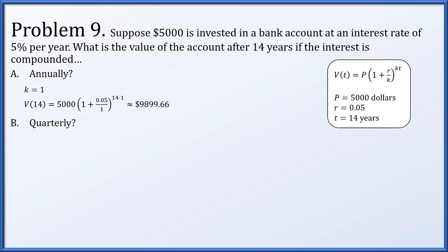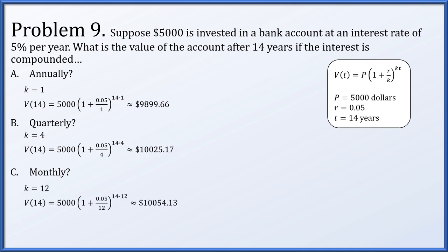What if we compound the interest quarterly? We get one quarter as much interest, but four times as often — k equals 4 — and plugging in gives $10,025.17. If we compound monthly, getting interest 12 times as often but 1/12 as much, k equals 12, giving $10,054.13. Every time we increase compounding frequency while scaling down the interest proportionally, we get slightly more money. Going annually to quarterly made about $125 difference, but going quarterly to monthly barely made $28–$29 difference.